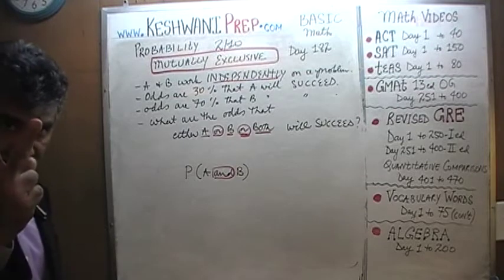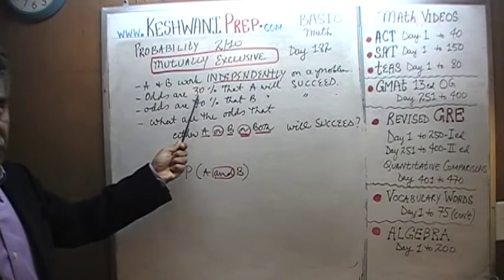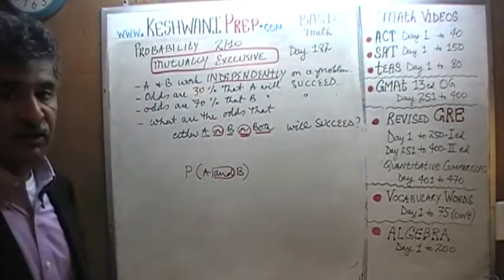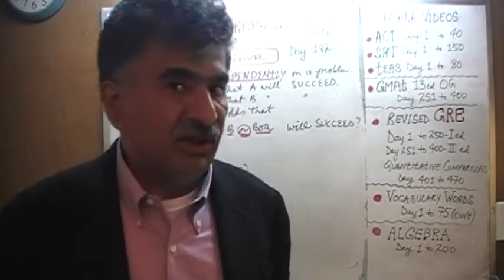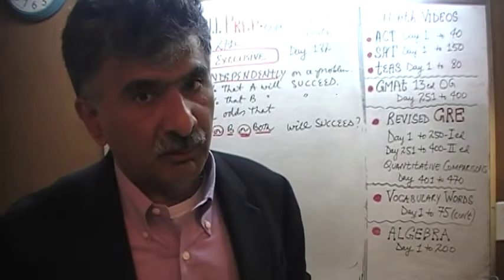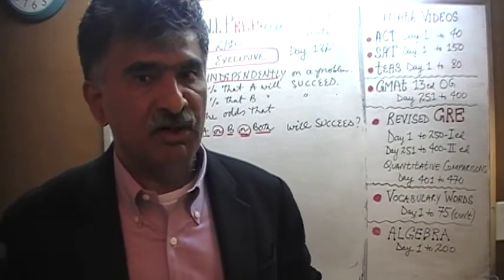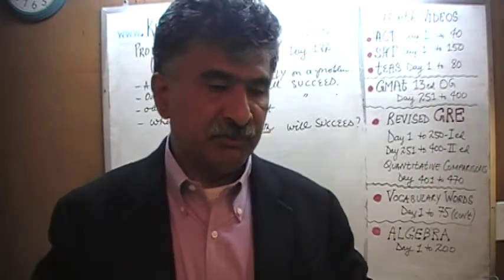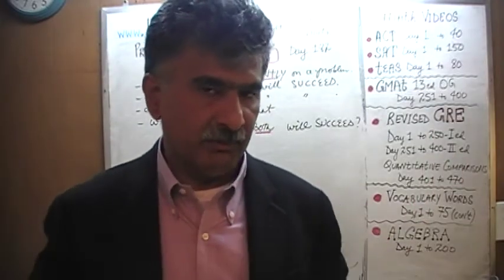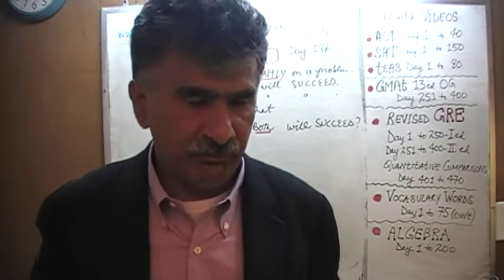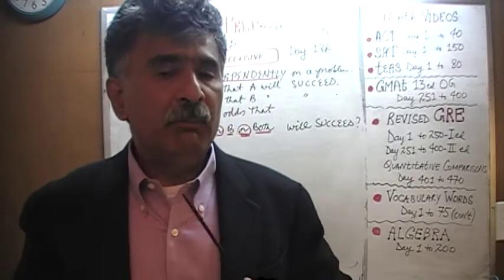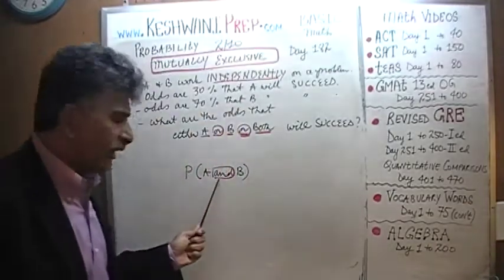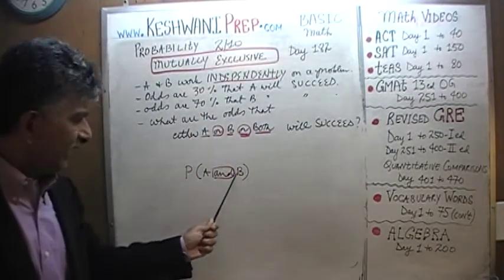I have two people on my staff. One has only a 30% chance of figuring out a solution to this particular problem. The other person is more experienced — my gut feeling tells me he has a 70% chance because he has more experience, more knowledge. I put both of them in two separate rooms and give them the problem. What are the odds that they will both succeed?